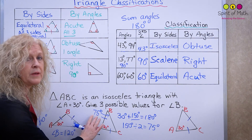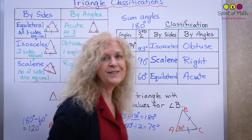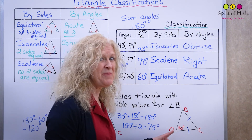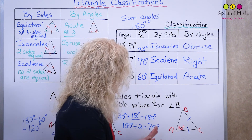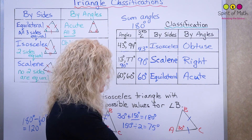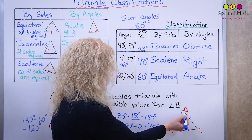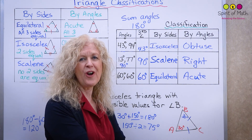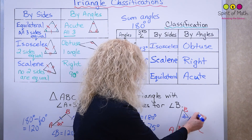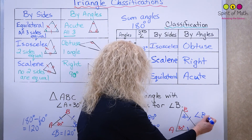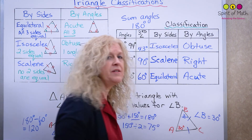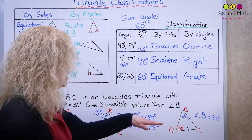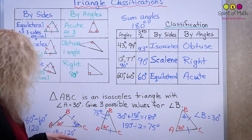For the last case, notice where the ticks are — this shows that the 30-degree angle is one of the equal pair, so the angle opposite to it is also 30 degrees. Angle B equals 30 degrees. The three possible values for angle B when angle A is 30 degrees are: 30 degrees, 75 degrees, or 120 degrees.